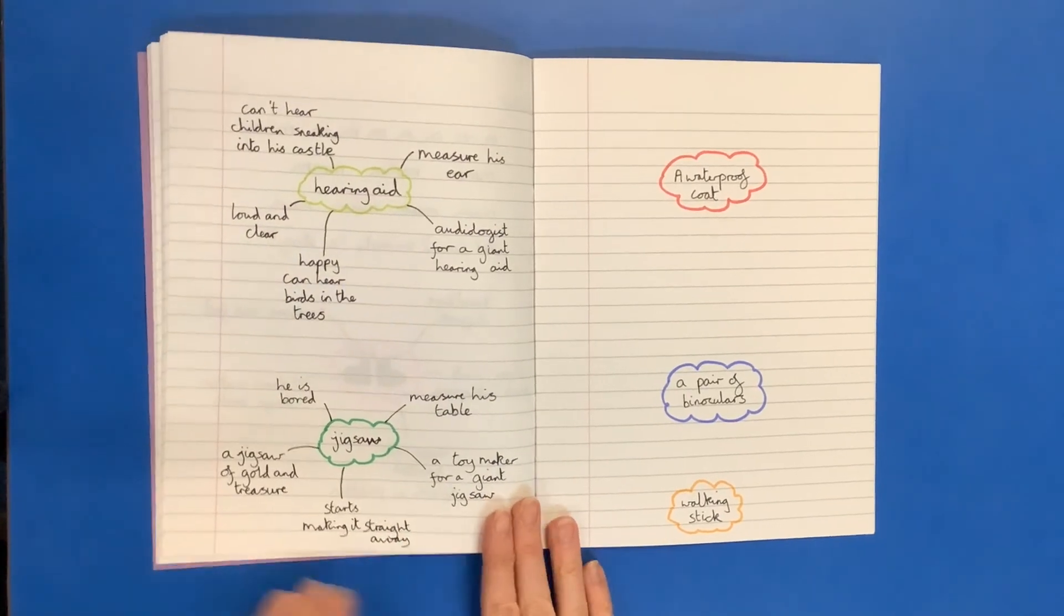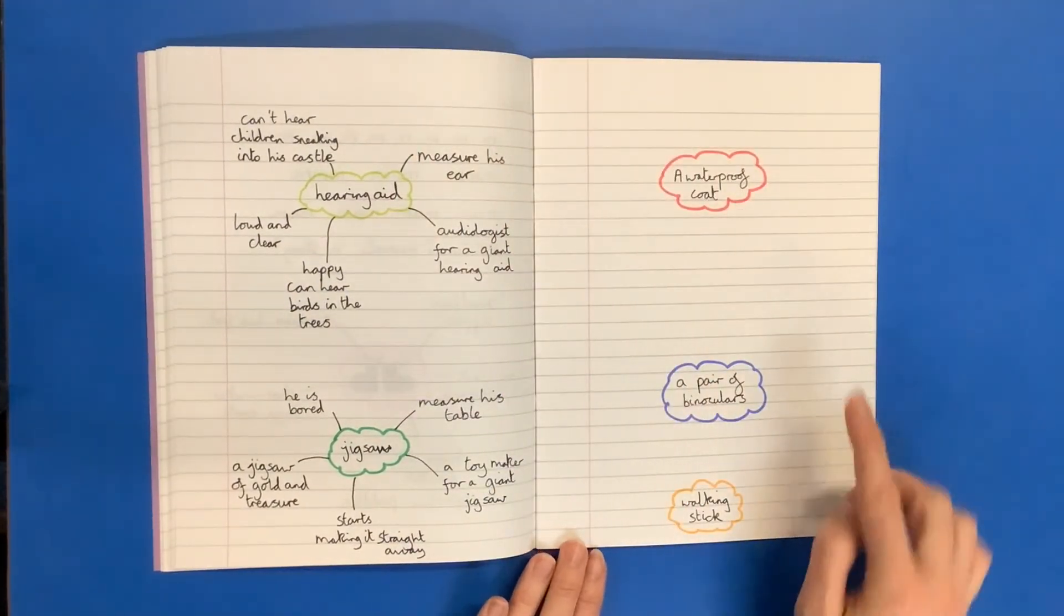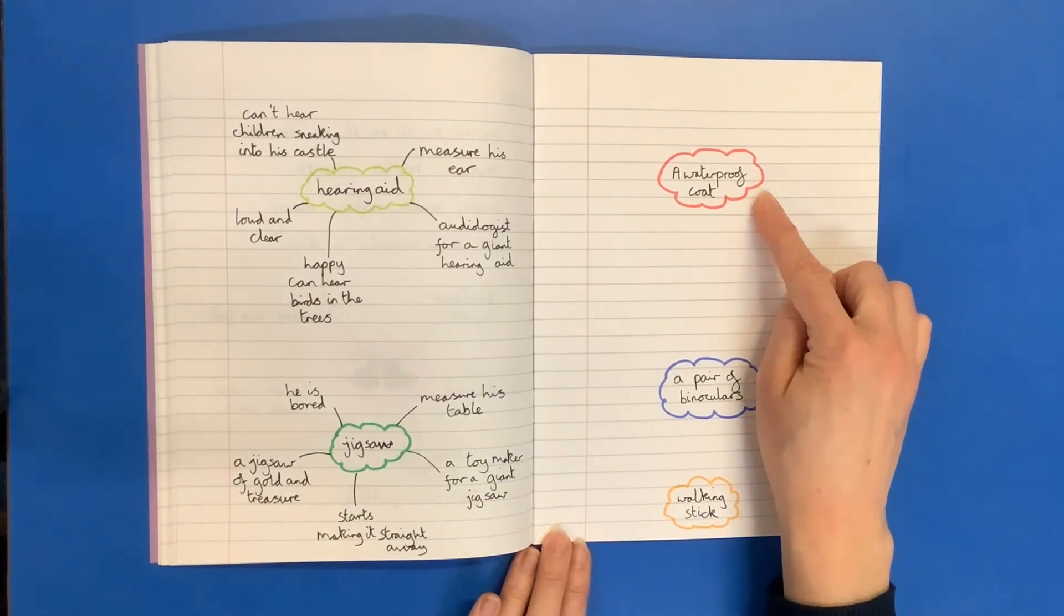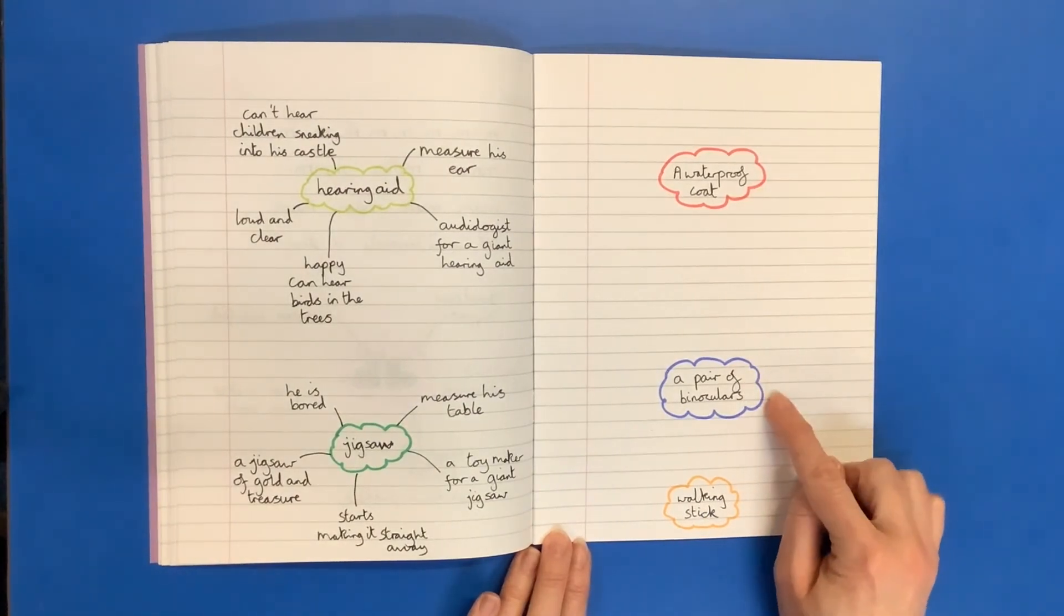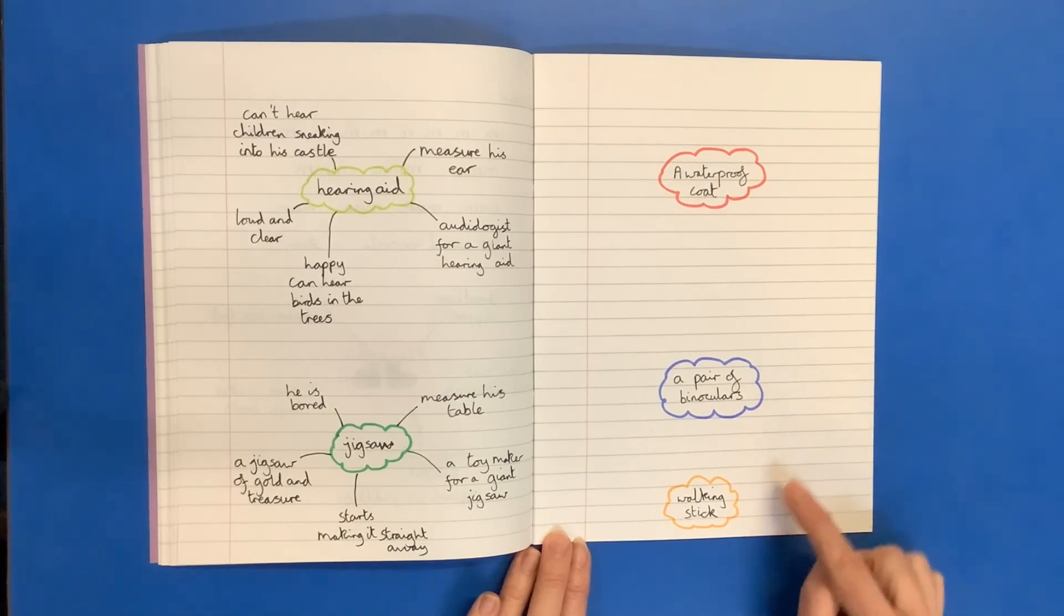So some of the other ideas you could think of your own ideas for. A waterproof coat to go walking around the gardens. A pair of binoculars to see what was going on down in the world below. And again a walking stick to help him walk.